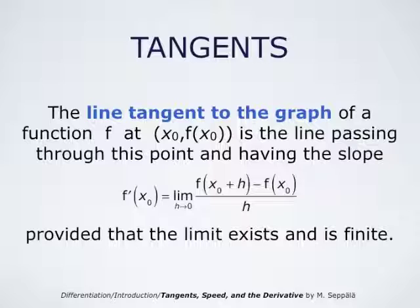The line tangent to the graph of the function f at the point (x₀, f(x₀)) is the line passing through this point and having the slope f prime at x₀. We of course assume that this limit exists and is finite.